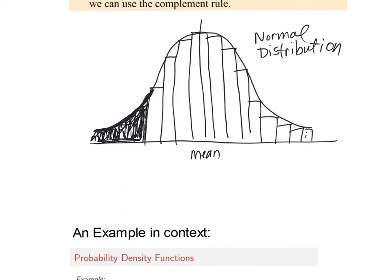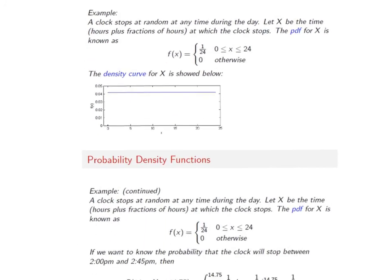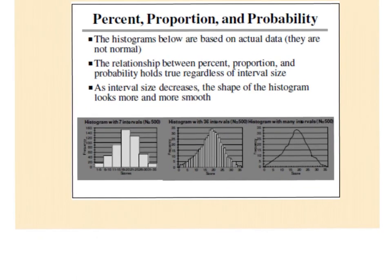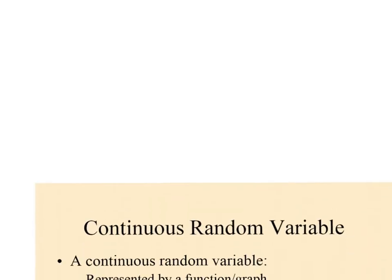We're not going to do calculus, but all the numbers we use come from someone who computed the calculus for this curve and found the area under the function from one point to another. In calculus, you break the area into smaller and smaller rectangles — a histogram with 7 intervals looks jagged, but with 36 intervals it becomes smoother. As intervals increase, the tops become smoother and give a better representation of that area.